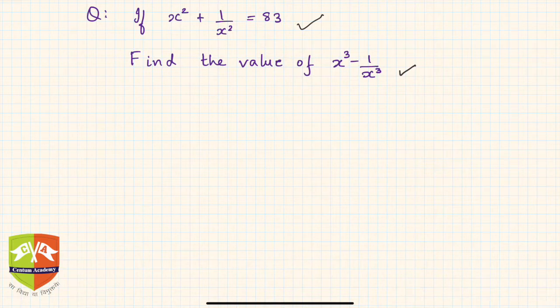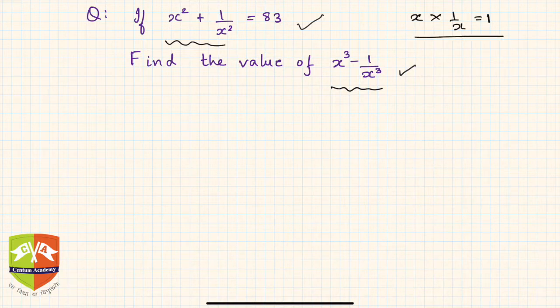If you see, there are two terms and their power is 2; here the power is 3. And one important thing is x × 1/x is a constant, that is 1. So this kind of problem is typical, and they use nothing but algebraic identities.